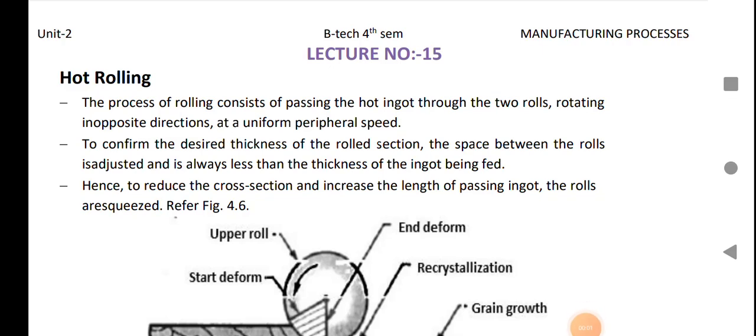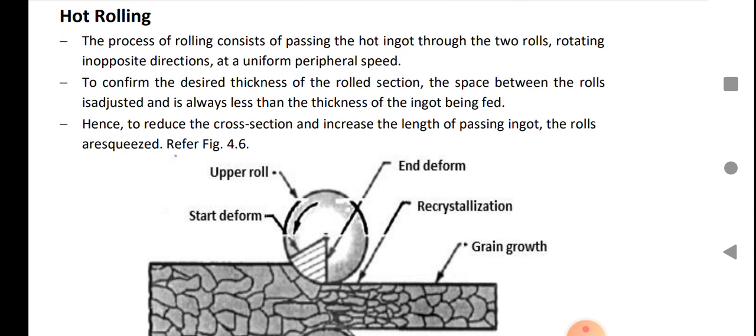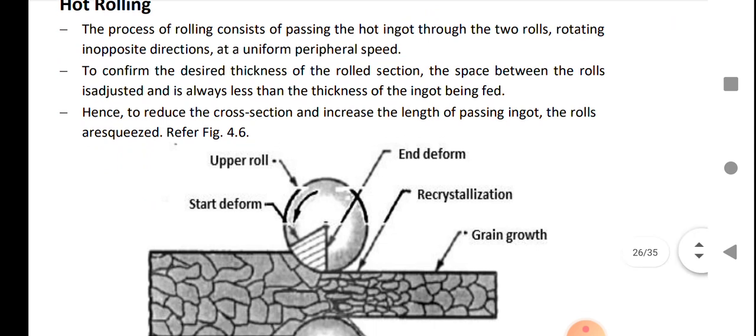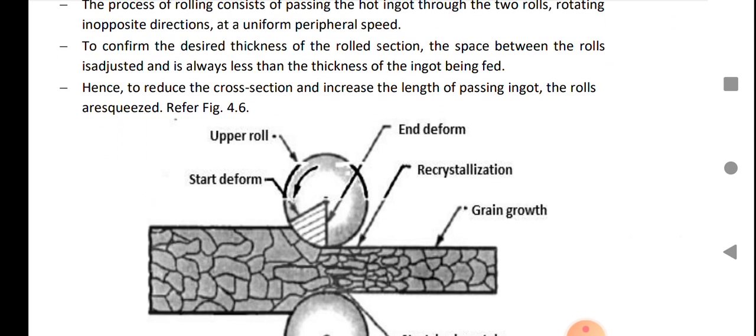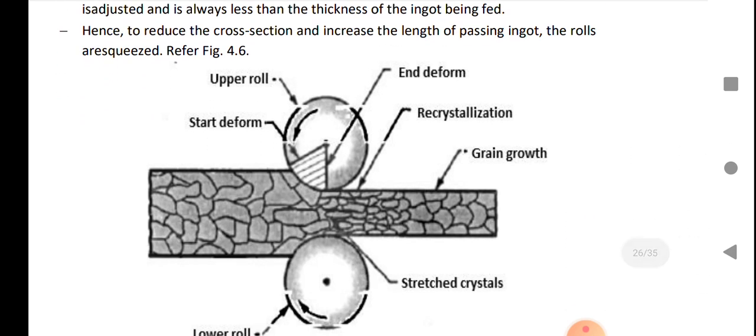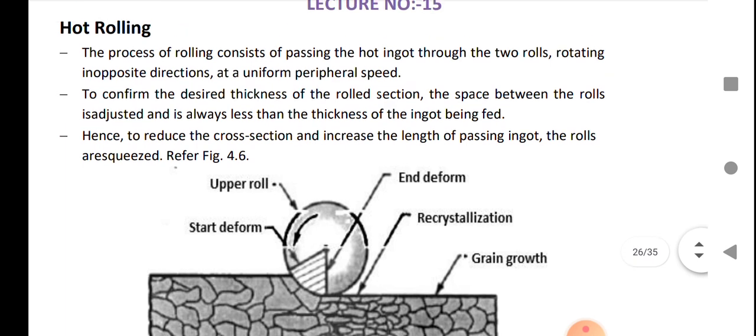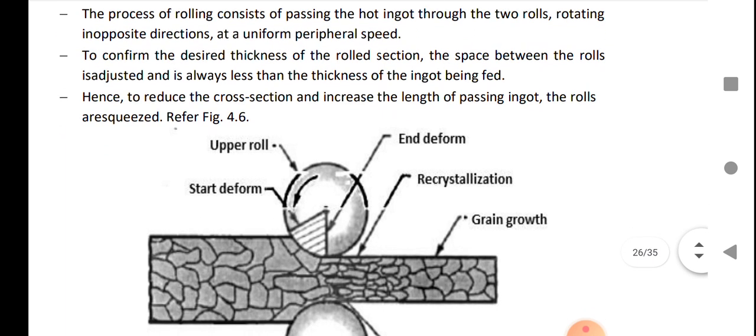Welcome students, today our topic is hot rolling process. The process of rolling consists of passing a hot ingot through two rolls. As you see in this figure, two rolls up and down. When the billet is inserted between the two rolls, the cross-section of the billet is reduced by applying rotating force on the ingot.